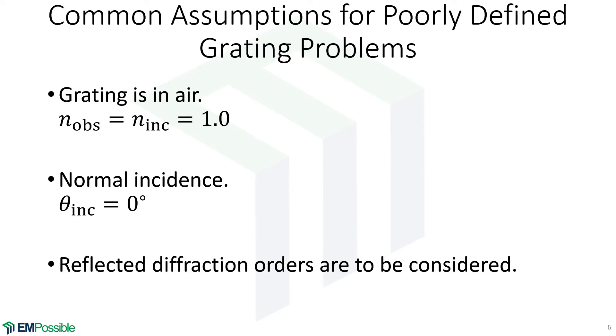In summary for this example, I want to go through the three key assumptions that I see so often not specified in these grating problems that I always have to make. One is that the grating is in air. They rarely specify a refractive index, and I think that's a shame because that does change the answer. But if not specified, we have to do something, and I think it's okay to assume air.